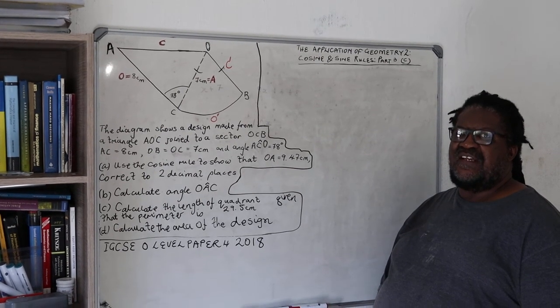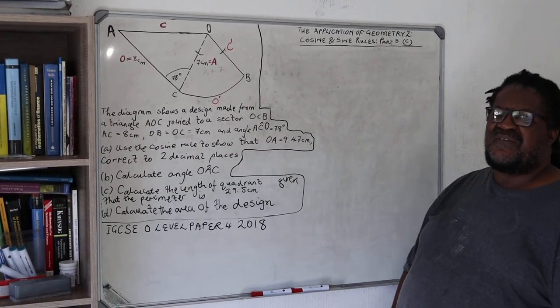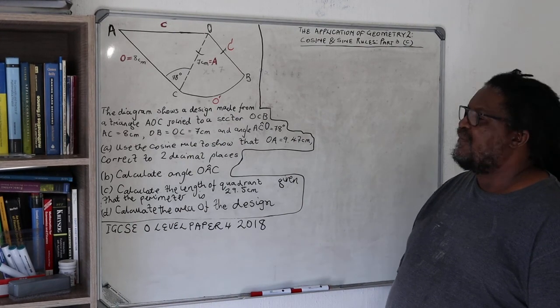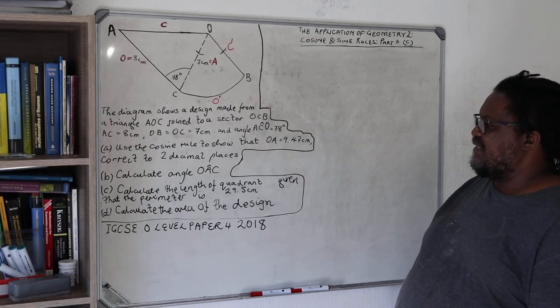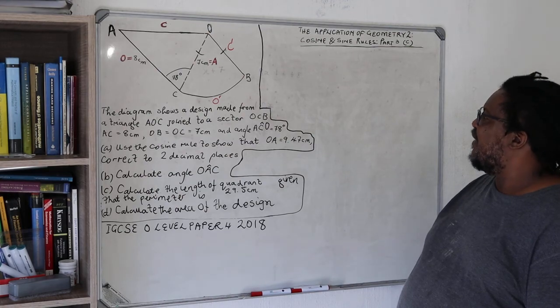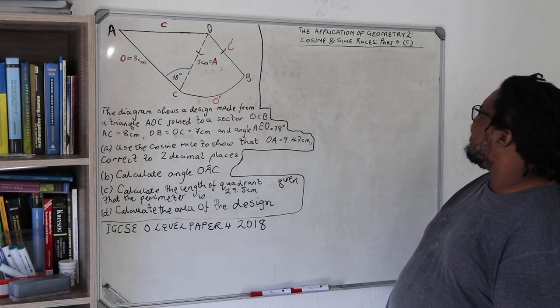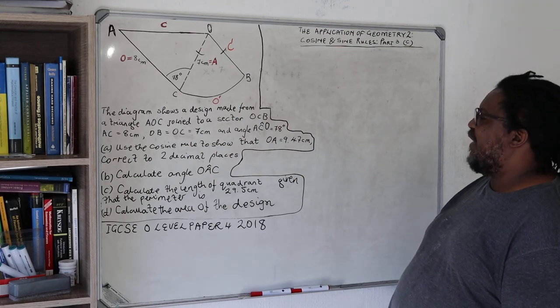Good morning, good afternoon, good evening. It's the Oracle of Chinemkutu and welcome back. We are now looking at question C of the application of geometry 2, cosine and sine rules, part 3.